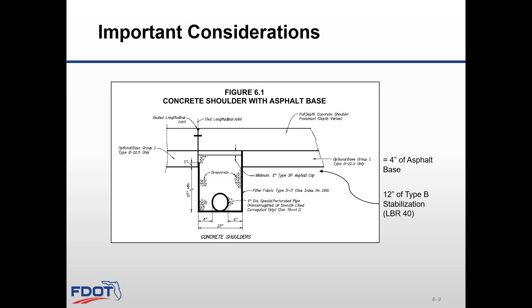Some important considerations for designing construction of concrete shoulder with asphalt base: the transverse joints should match the mainline joints, and the transverse joints for the shoulder should be doweled for future MOT use.